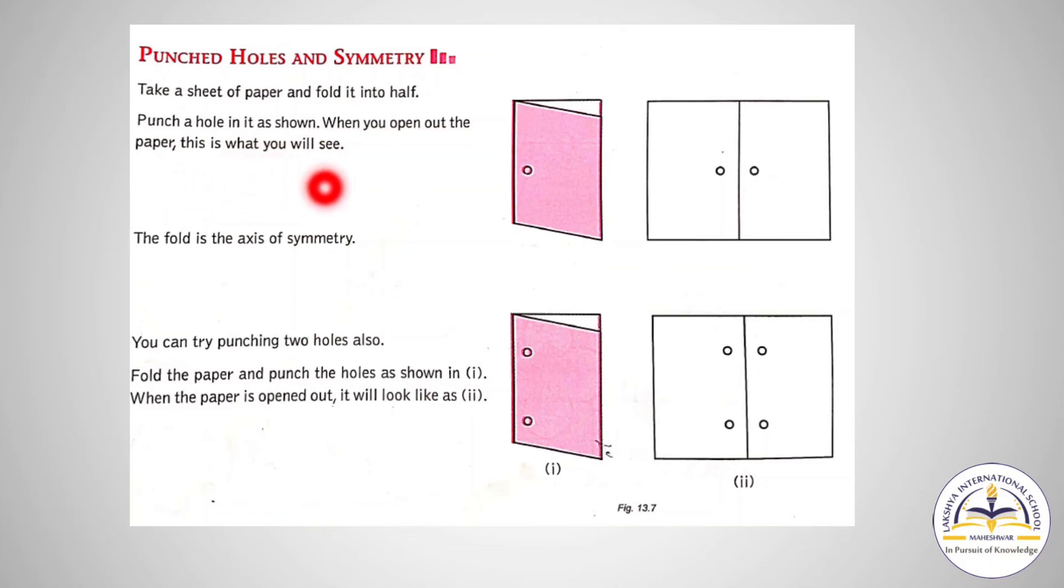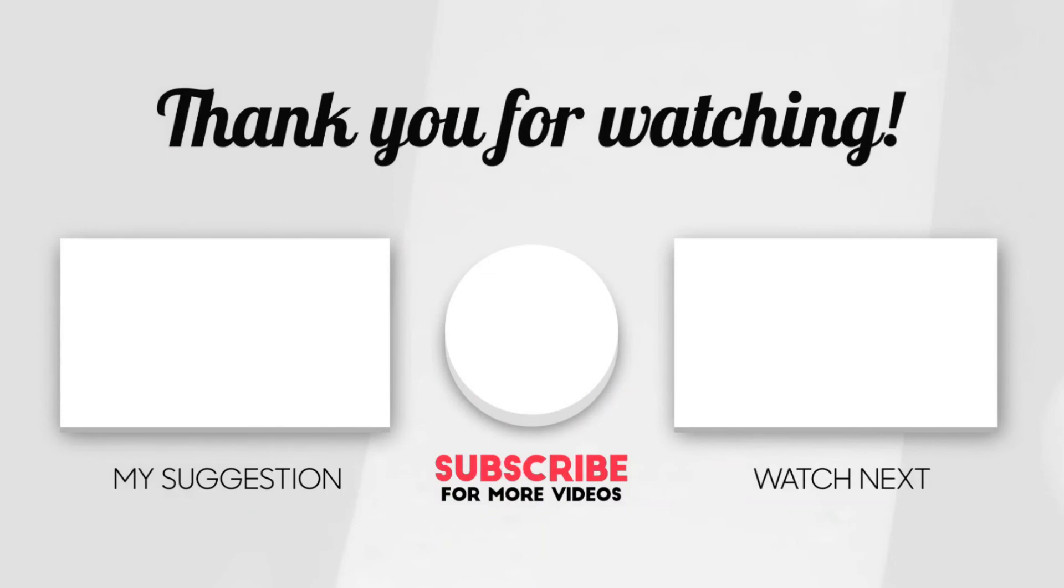this is what you will see. The fold is the axis of symmetry. When you fold this paper and punch a hole in it, and when you open it, you can see this line will be the axis of symmetry for the paper. This is an activity for you. Here we have completed the introduction part of symmetry.